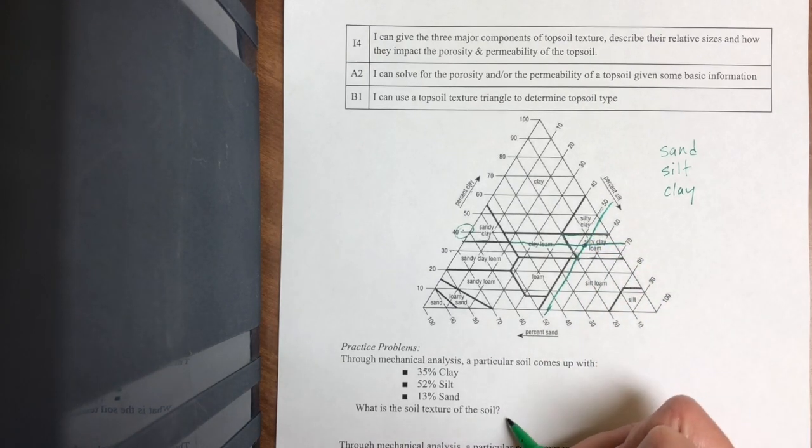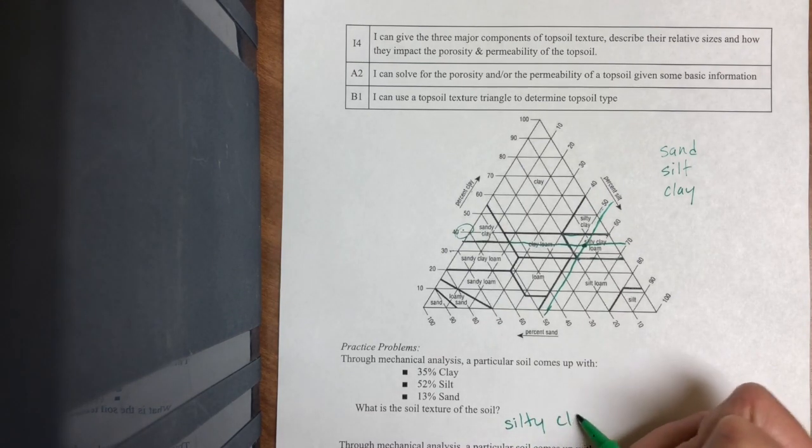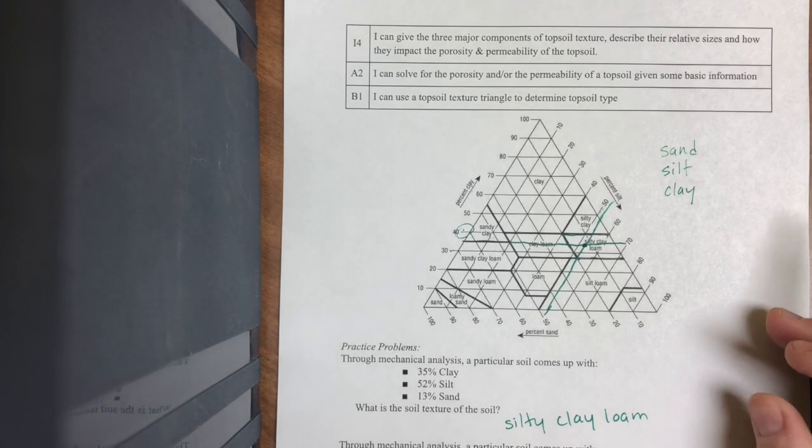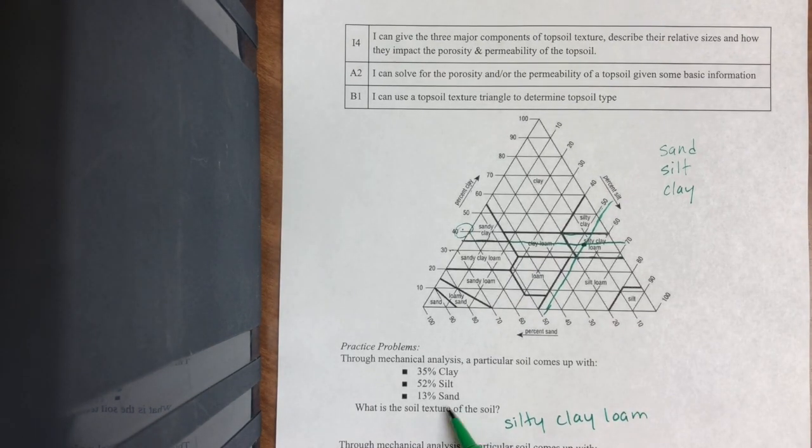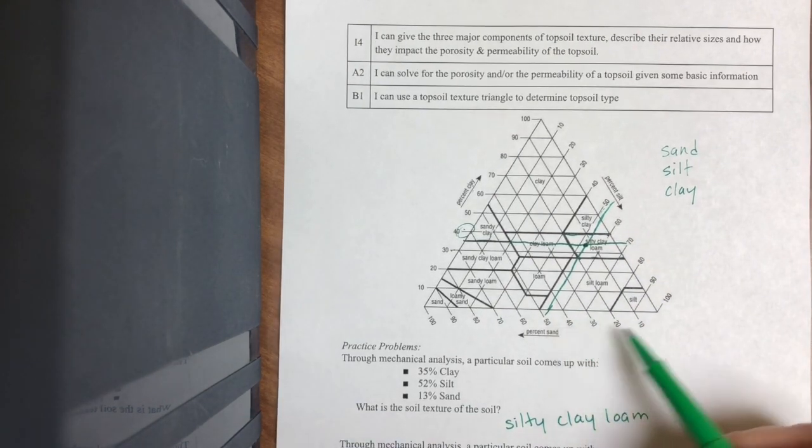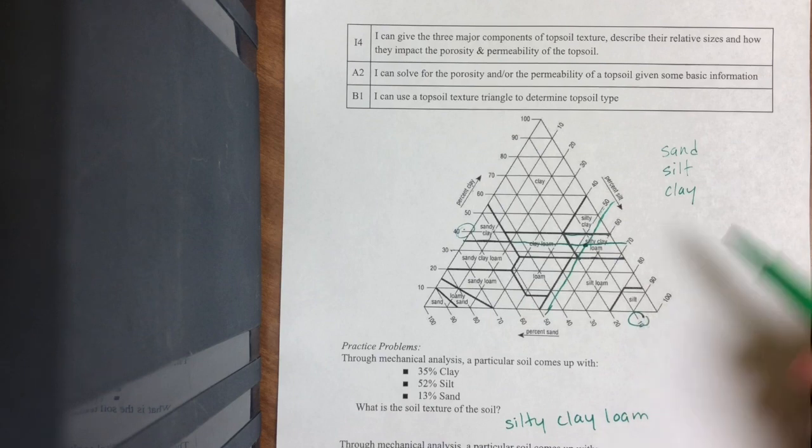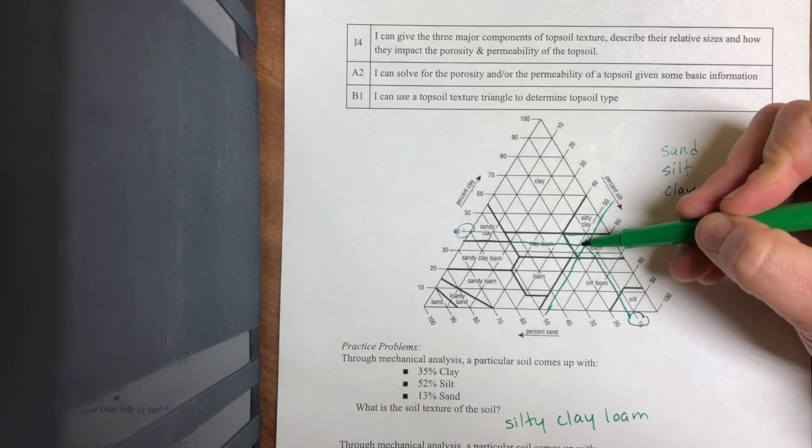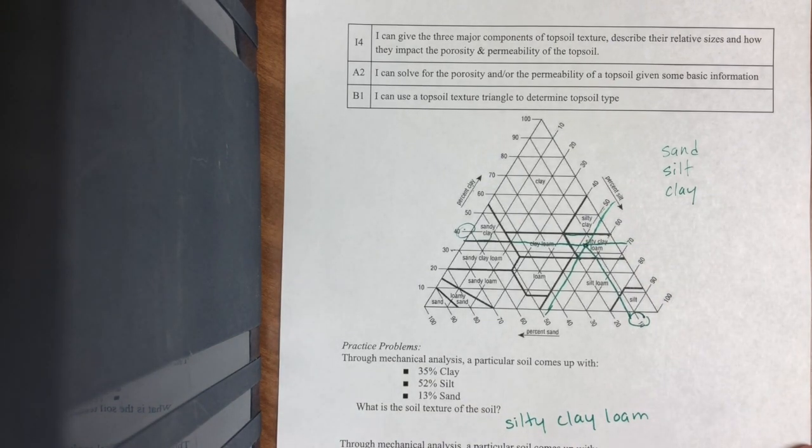And so I'm going to classify this as a silty clay loam. To double check, I always think it's good to double check. 13% is sand. So I'm going to come to sand, sand would be on this side, notice the direction of the lines, 13% looks like about here, come up here, intersects there, and I get silty clay loam.